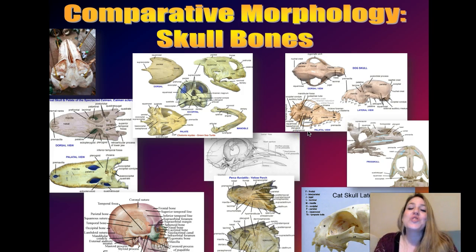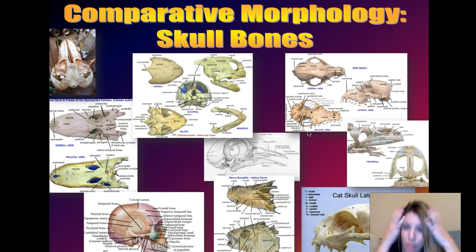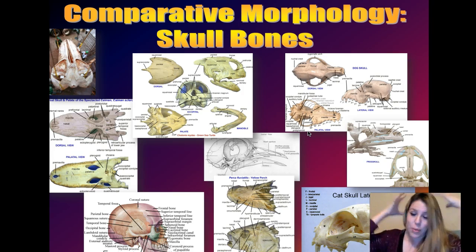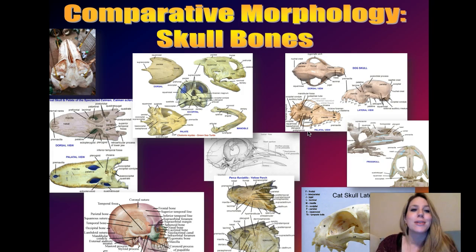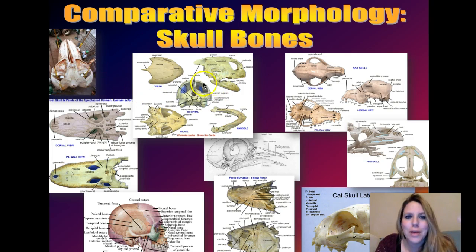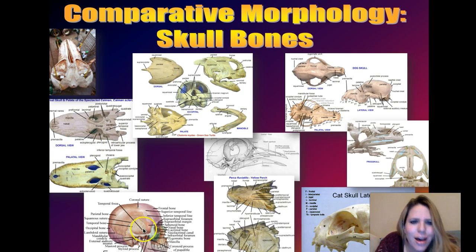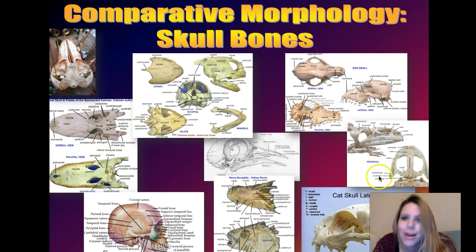But this is true of any bones in the body that you look at. The skull is actually not one bone — it's made of a lot of different bones. And you can trace each of these little bones to all the different vertebrate species. Here we have a whale, a turtle, a crocodile, a human, a fish, a pigeon, a frog, and a dog.